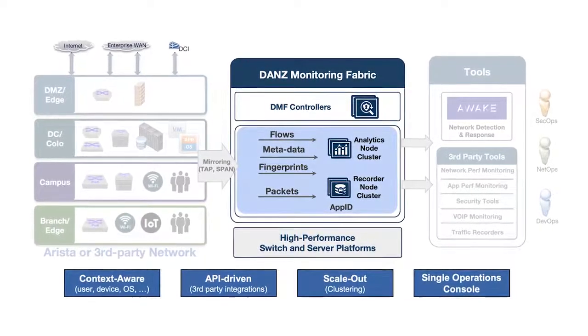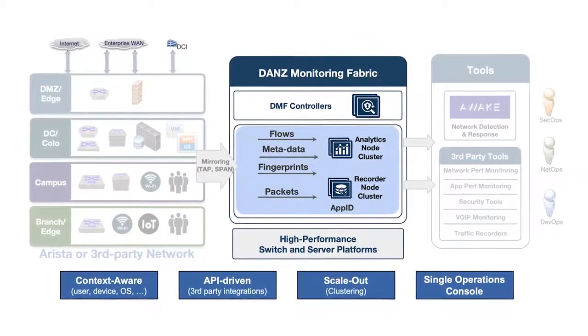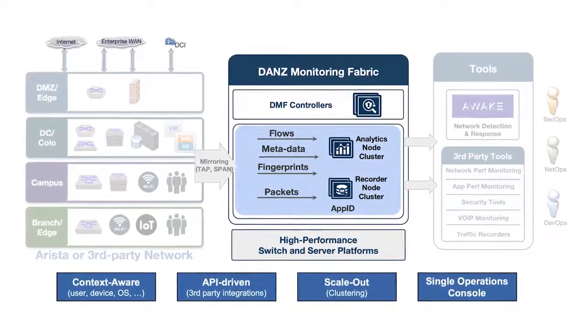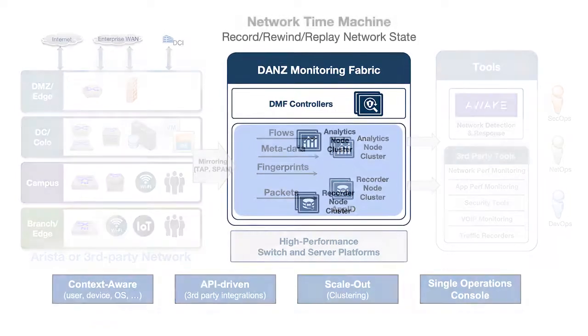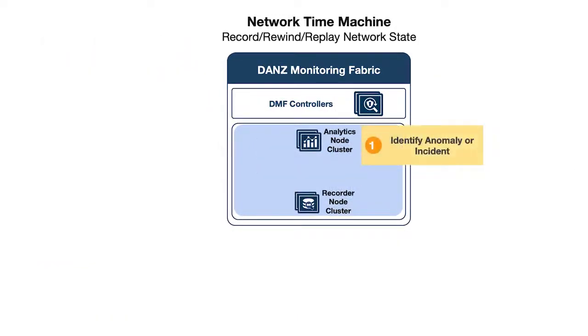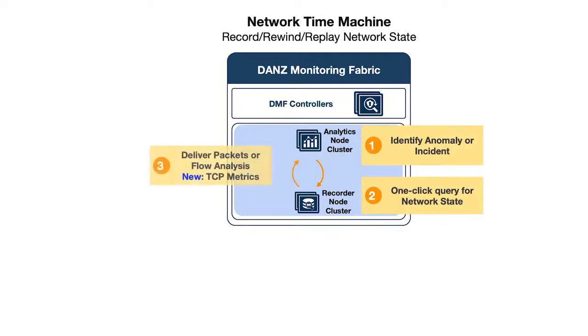DMF's system-level approach delivers flows, metadata, and associated context to the analytics node, as well as network traffic to the recorder node. When an incident is detected in the analytics node, a one-click query is sent to the recorder node, which provides detailed TCP-level flow analysis or generates PCAP for further drill down. This integrated workflow allows operators to zero in on anomalies that have occurred in the past by instantaneously retrieving historical network state.